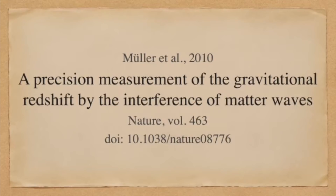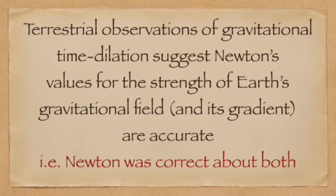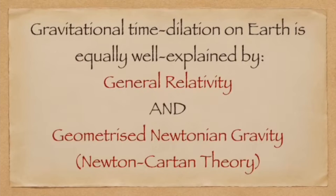The fact that space-time curves, as Einstein predicted, is thus confirmed observationally. Notably, these results also confirm the value for the strength of Earth's gravitational field and its gradient that were obtained by Newton — so in one fell swoop, these experiments confirm both Einstein's geometric argument and the validity of the Newtonian approximation. However, observations of gravitational redshift on Earth's surface do not necessarily demonstrate the full theory of general relativity; for that we must rely on extraterrestrial observations. On Earth's surface, there is another theory that can explain these results.